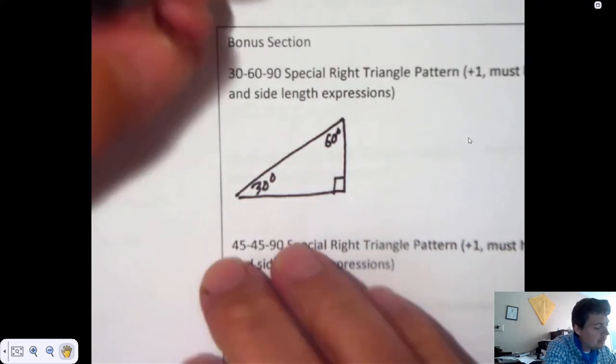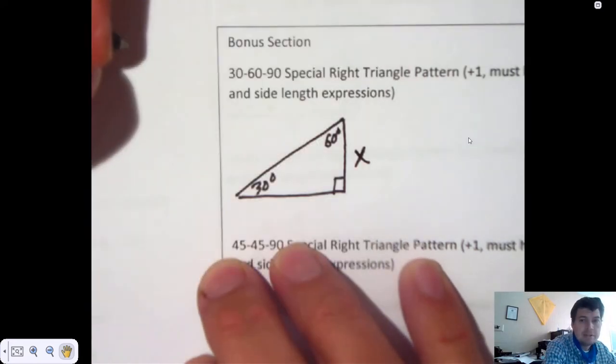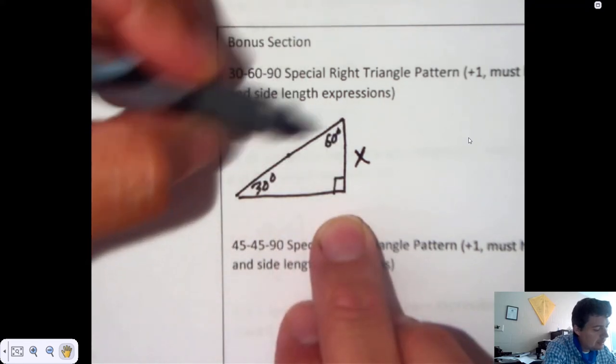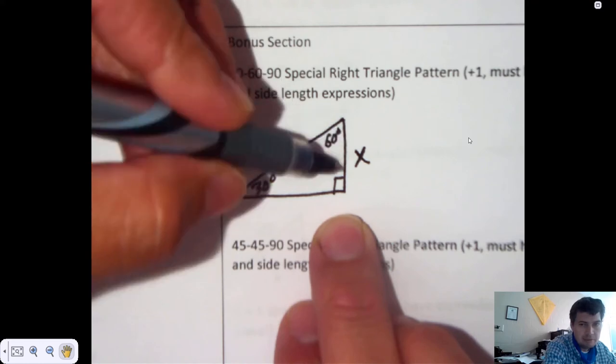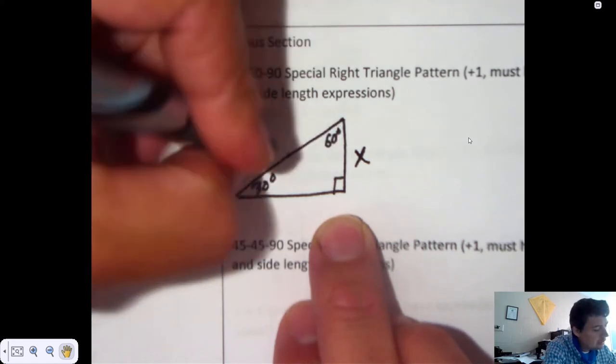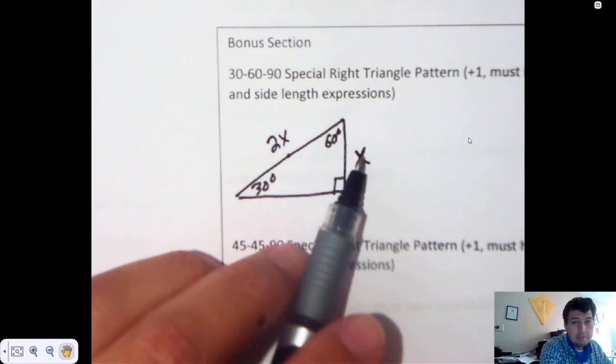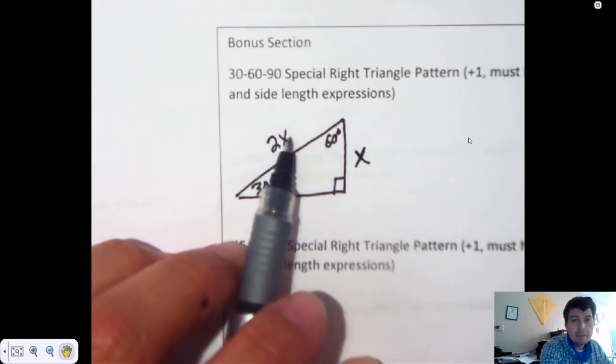On a 30-60-90 special right triangle, there is a pattern that's established. If the short leg is x units long, the hypotenuse is twice that. Most kids can see that this hypotenuse is roughly twice that length. We call it 2x. So if this piece was 5, this piece would be 10 because we double it. If this piece was something like 30, that would make this piece 15 because we would cut it in half.